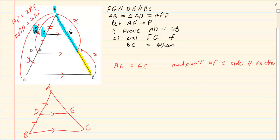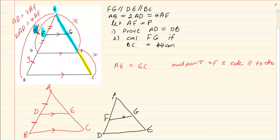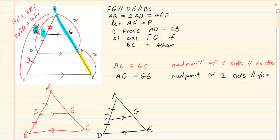Now if you take this triangle out — we've got A, F, D, and then G and E. We know they are parallel, and we've just found out that they are midpoints. So what would that tell me about AG and GE? AG is going to equal GE. Again, midpoint of one side parallel to another. So we can say that AG is equal to GE — let's call it M.